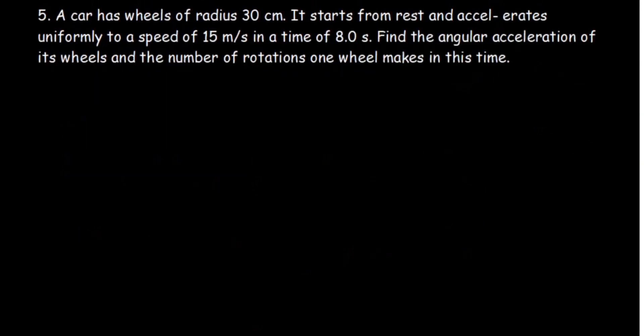Question 5. A car has wheels of radius 30 cm. It starts from rest and accelerates uniformly to a speed of 15 m per second in a time of 8 seconds.